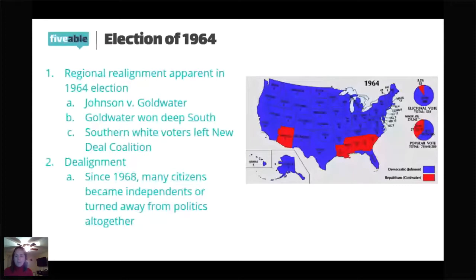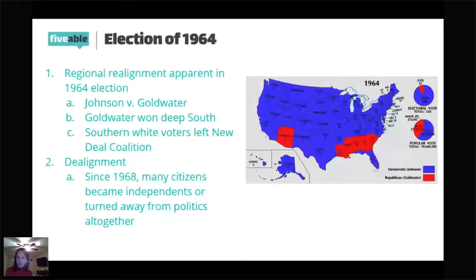Question two: Which of the following is the best explanation for why a political party might change its position to begin supporting increased civil rights protections? A — most supporters of the party are advocates for smaller government; B — the party hopes to increase its support among minority groups; C — the party's base has traditionally been highly conservative; D — the party gained control of Congress in the last election. All B's and all correct. If a political party changes its position to begin supporting increased civil rights protections, it's most likely because they're trying to increase their support among minority groups.